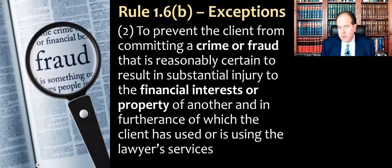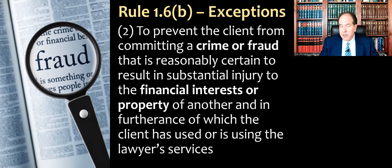Under 1.6B2, a lawyer may disclose to prevent the client from committing a crime or fraud that is reasonably certain to result in substantial injury to the financial interest or property of another, and in furtherance of which the client has used or is using the lawyer's services. This only applies where the client is actually using your services to commit the crime or fraud — for example, using your firm to launder money, cover up evidence, or destroy evidence. The very fact that you know your client is committing crime or fraud unrelated to your representation does not trigger this rule. Again, for the MPRE, remember this is a permissive rule, not a mandatory rule.